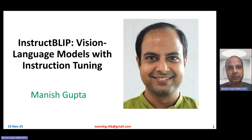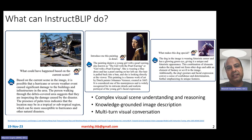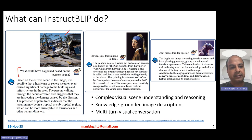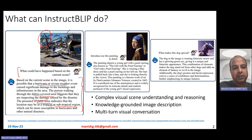It builds up on top of BLIP2. Let's look at a few examples to understand the importance of the InstructBLIP model. Look at this image — it looks like something has gone really wrong there. The question one can ask given the image is: what could have happened based on the current scene? The bot comes up with a descriptive answer: some hurricane or severe weather event might have happened, there is a debris-covered area, the guy seems to be doing an inspection of the damage, and since there are palm trees, this must be some tropical or subtropical region. So it does nice complex visual scene understanding and reasoning on top of what it sees in the image.